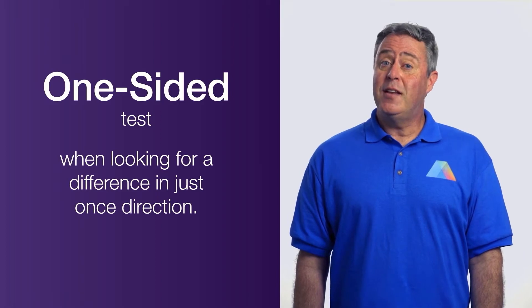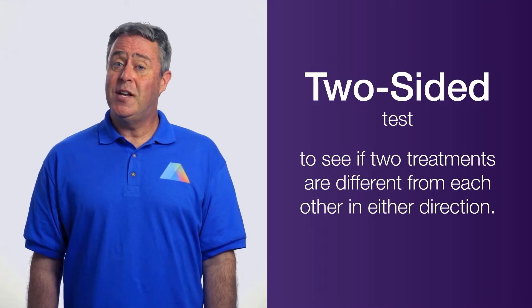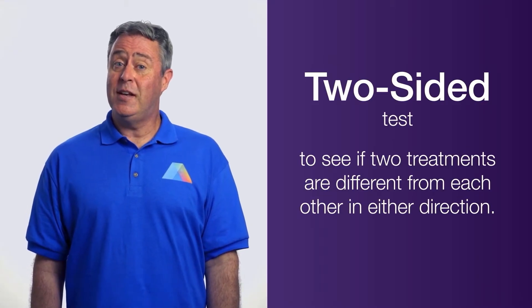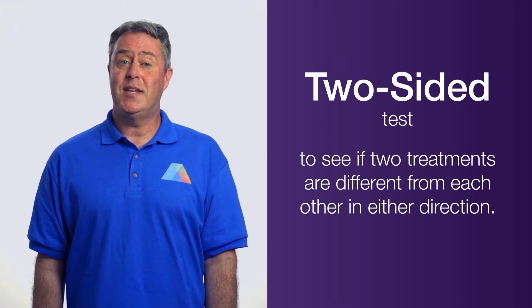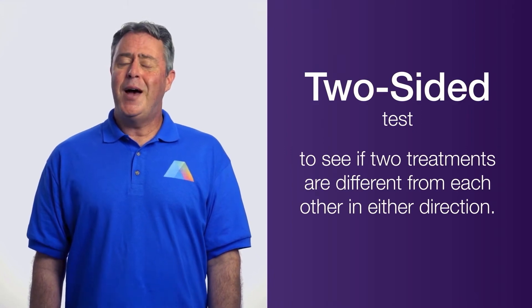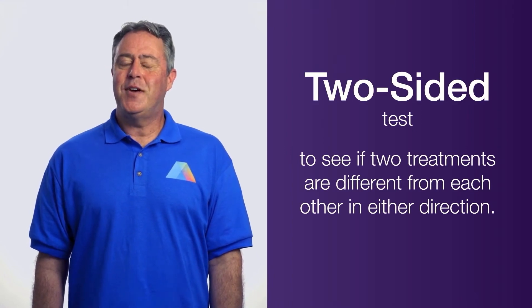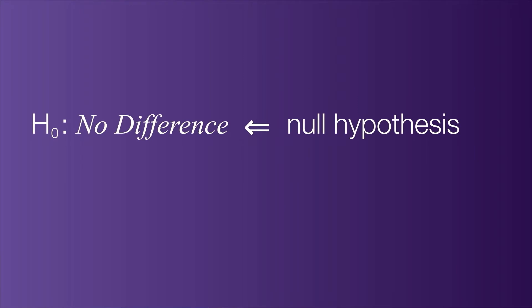On the other hand, if you just want to see if two treatments are different from each other in either direction, you would choose a two-sided test. But how does this choice affect the p-value? Here are the details.